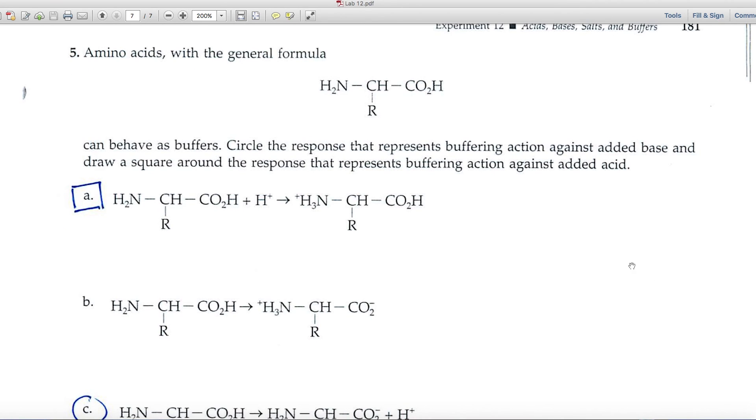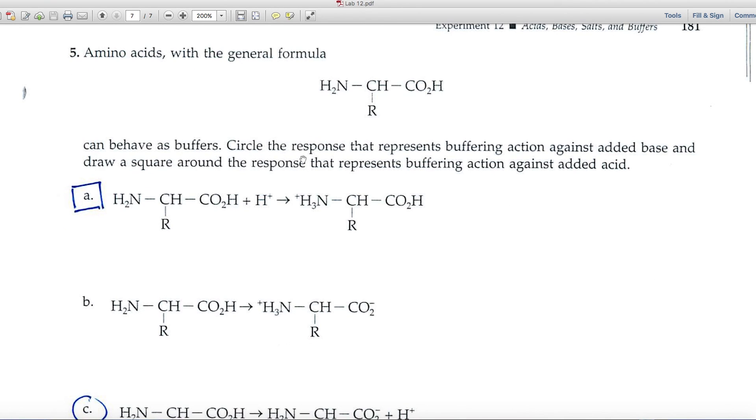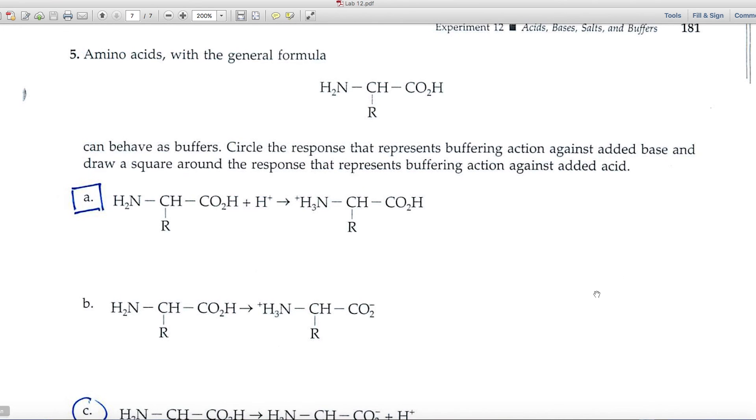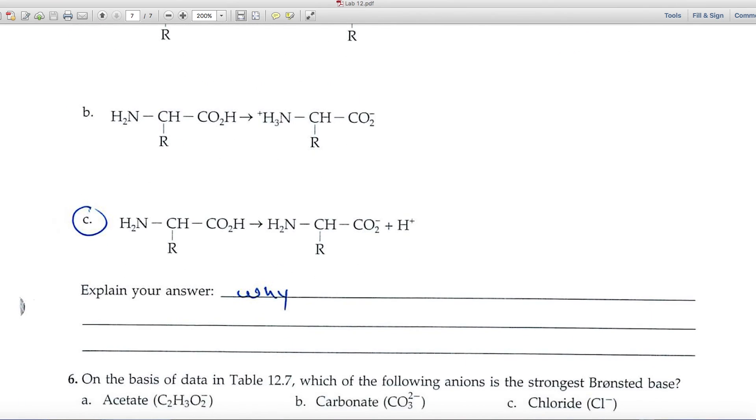And it asks us to circle the response that represents buffering action against added base and draw a square around the response that represents buffering against added acid. A gets the square. C gets the circle. And then I'll leave it up to you to tell me why. Hey, I hope you enjoy the experiment. Send me an email if I can be of help. Let's do it.